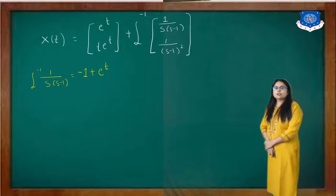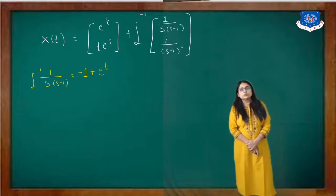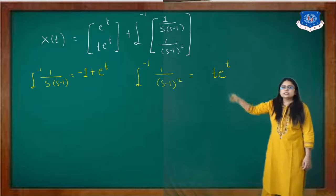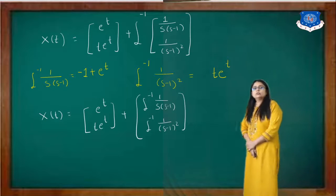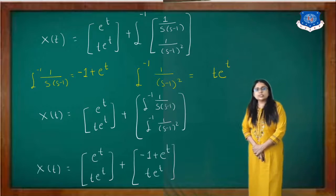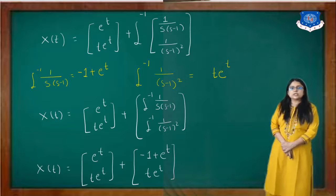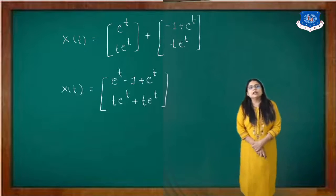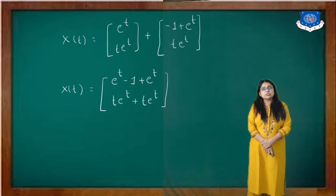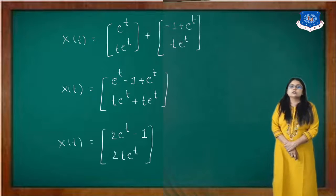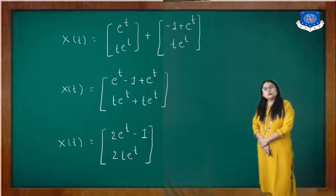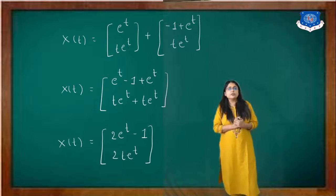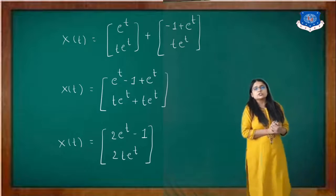The inverse Laplace of the second term matrix gives [-1 + e^t, t·e^t]. Adding both matrix terms: x(t) equals [e^t + (-1 + e^t), t·e^t + t·e^t], which simplifies to [2e^t - 1, 2t·e^t]. This is the solution of the state equations, x(t).